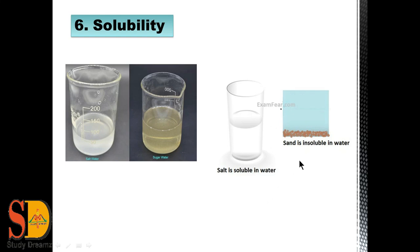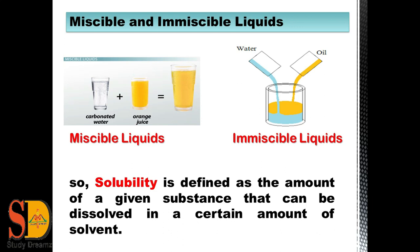Sand in water is an example of an insoluble material, because insoluble materials are those which do not dissolve completely in water. Apart from soluble and insoluble materials, there are two more terms: miscible liquids and immiscible liquids. Miscible liquids are those that mix with each other — for example, water and orange juice are completely mixed, making them miscible. Immiscible liquids do not mix — for example, when we mix water and oil, a separate layer of oil forms on the water. Solubility is defined as the amount of a given substance that can be dissolved in a certain amount of solvent.